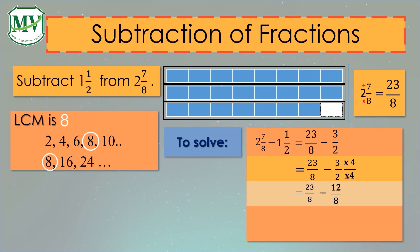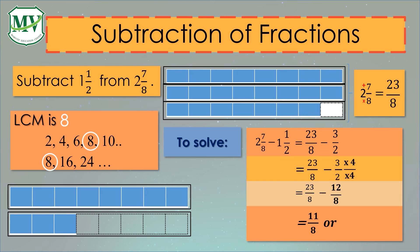Now we can subtract them. 23 minus 12 equals 11, then copy the denominator 8. The answer 11 over 8 is an improper fraction, so we need to express it as a mixed number. To do this, draw 2 boxes with 8 divisions each and shade 11 boxes. The mixed number of 11 over 8 is 1 whole and 3 over 8. So, 2 and 7 over 8 minus 1 and 1 over 2 equals 1 and 3 over 8.